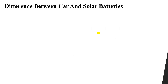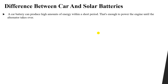What is the difference between a car battery and a solar battery? A car battery can produce a very large amount of energy in a very short amount of time, which is enough to power the engine of the car until the alternator takes over. So the function of the car battery is that it provides very large amounts of energy in a short period of time — spikes of energy.